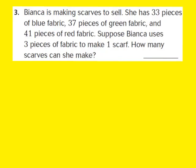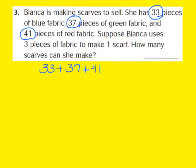Let's take a look at question number 3. I have a word problem, so my first step is to read it. As I read through the problem, I know that she has 33 pieces of blue fabric, 37 pieces of green fabric, and 41 pieces of red fabric. My first step is going to be to add those numbers together: 33 plus 37 plus 41, which gives me a total of 111 pieces of fabric.